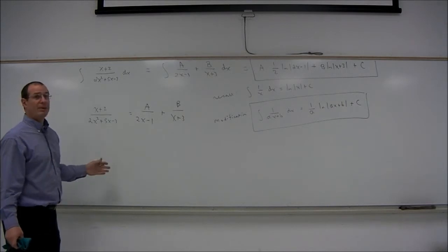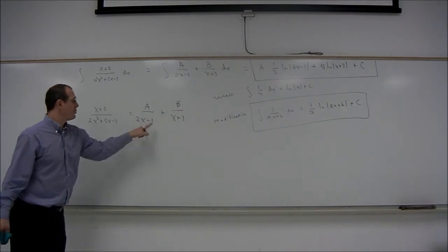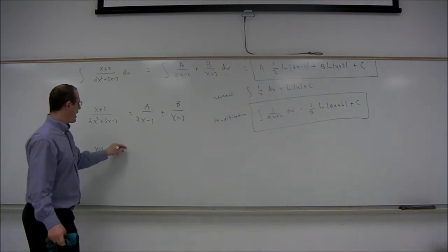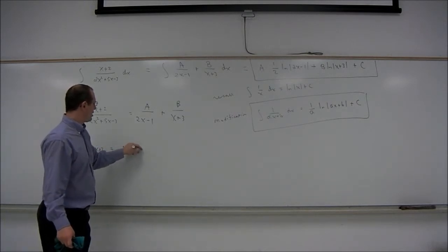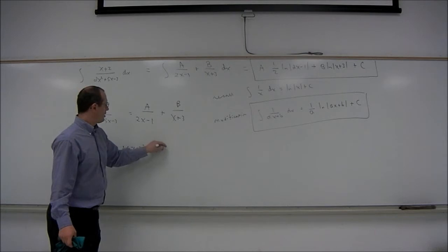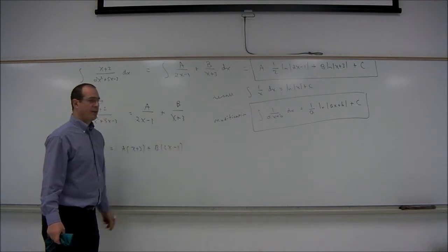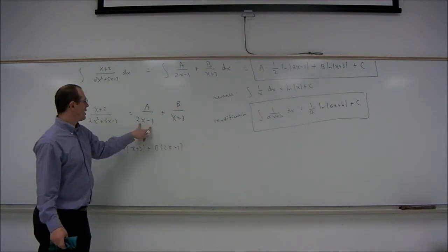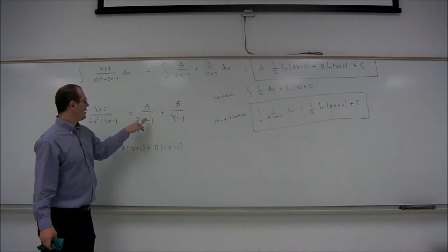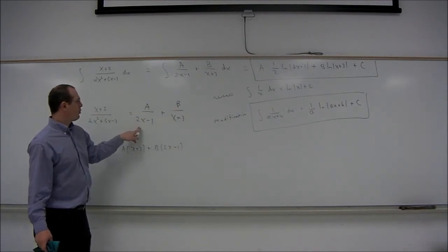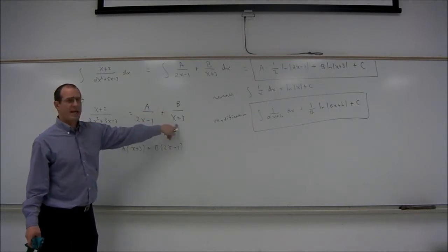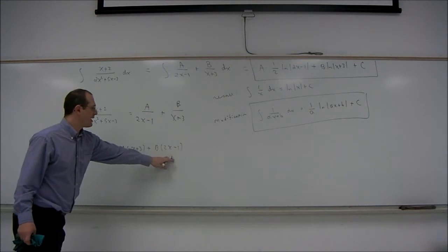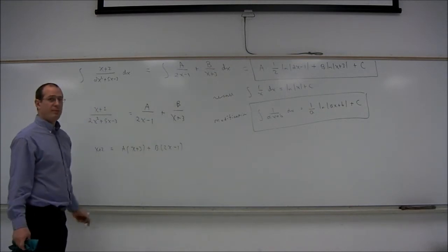Multiply both sides by the common denominator, 2x minus 1 times x plus 3. So we will get x plus 2 is equal to a times x plus 3 plus b times 2x minus 1. When we multiply the right side by 2x minus 1 times x plus 3, for the first fraction, the 2x minus 1 will cancel, and we'll be left with a times x plus 3. Similarly, for the second fraction, we'll get b times 2x minus 1.